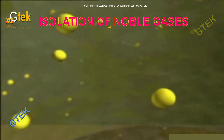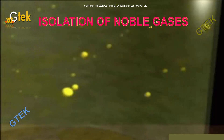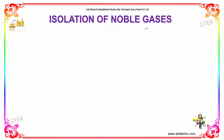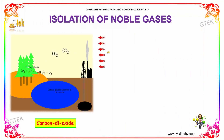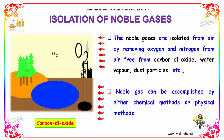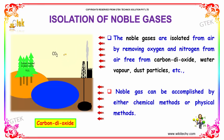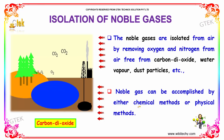Now let's work out the isolation of noble gases. The noble gases are isolated from air by removing oxygen and nitrogen from air that is free from carbon dioxide, water vapor, and dust particles. Noble gases can be isolated by either chemical methods or by physical methods.